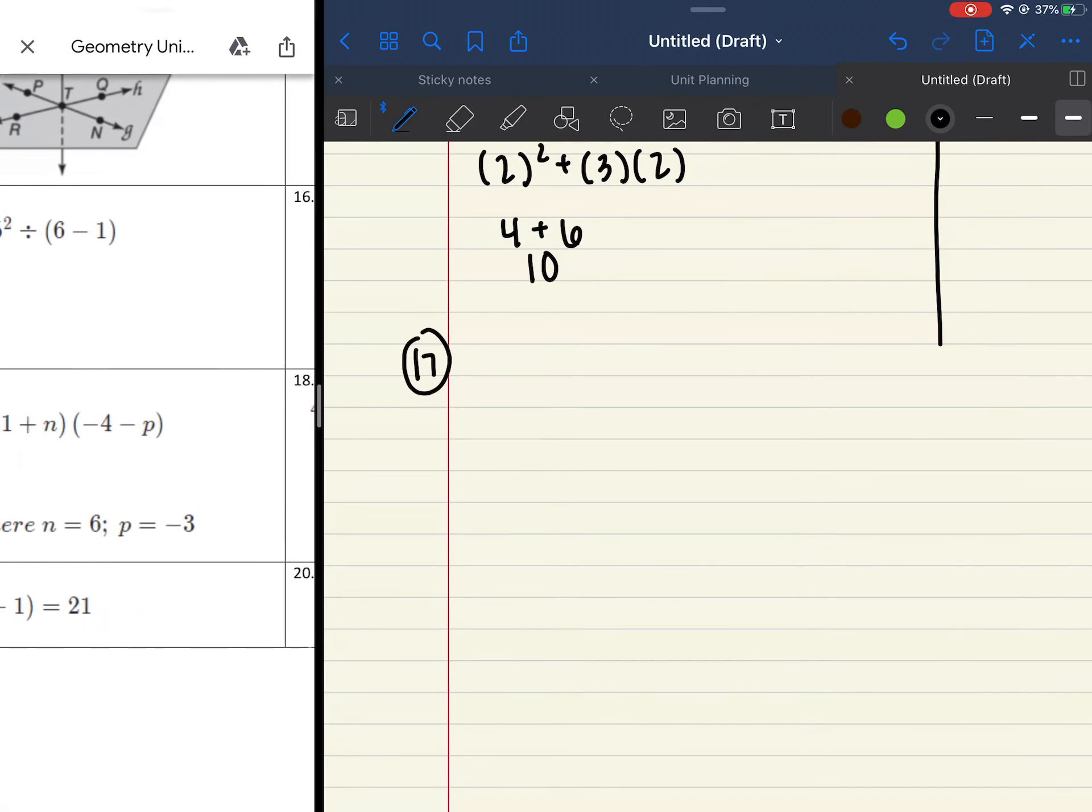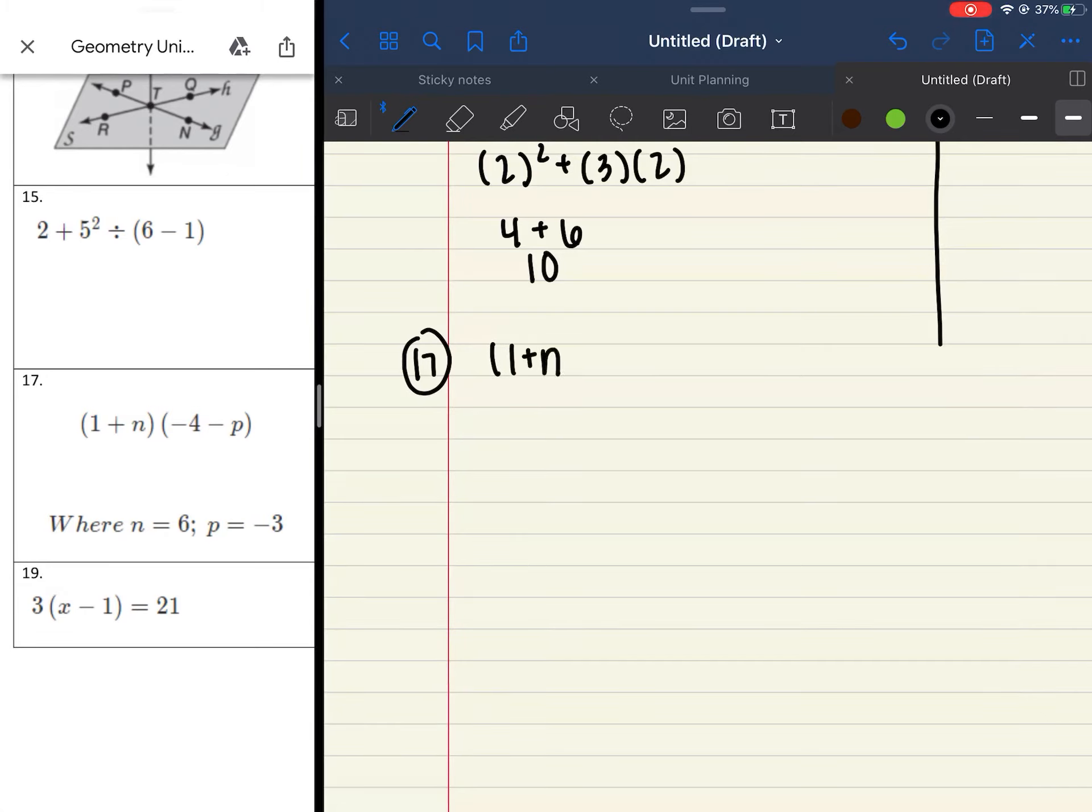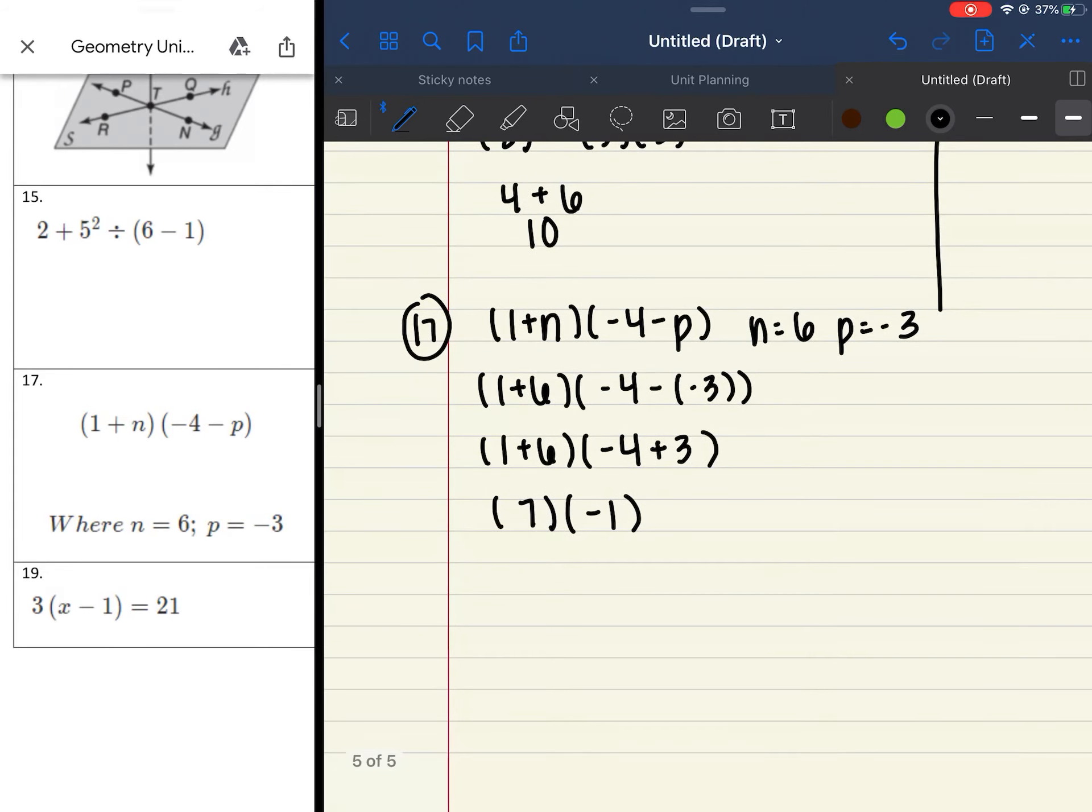Number 17, you have 1 plus n times negative 4 minus p, where n is equal to 6 and p is equal to negative 3. We plug in our numbers, so I have 1 plus 6 times negative 4 minus a negative 3. That's where a lot of us went wrong. So I'm going to clean up that second parentheses. 1 plus 6 minus 4. Remember when you subtract a negative, you're just adding. So now I'm going to simplify those parentheses. 1 plus 6 gives me 7. And negative 4 plus 3 gives me negative 1. And your last step is to multiply those together. 7 times negative 1 leaves you with negative 7.